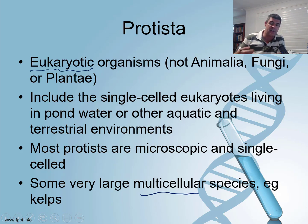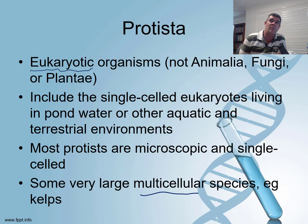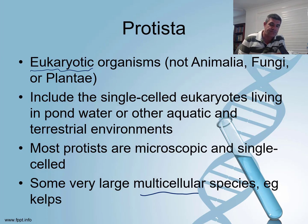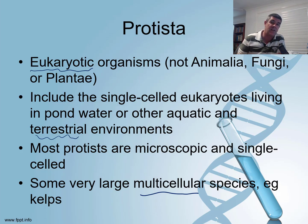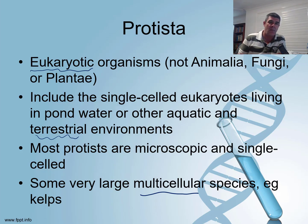An important distinction between protists and more complex organisms is that while some are multicellular, they don't tend to be multi-tissue or multi-organ. They don't have lots of specialised tissues organised in the complex way typical of plants and animals. As a result, most protists are microscopic and single-celled, and they tend to live in moist environments — they're aquatic, or if terrestrial, they live in fairly moist conditions. They need that fluid or liquid medium to move around in.